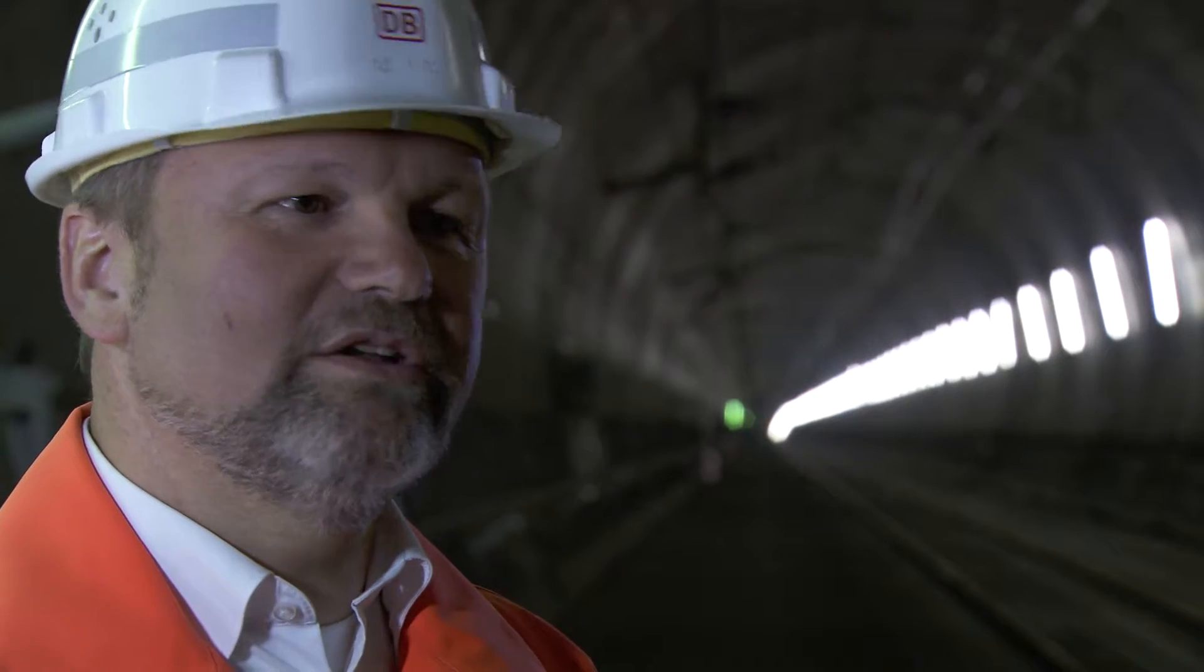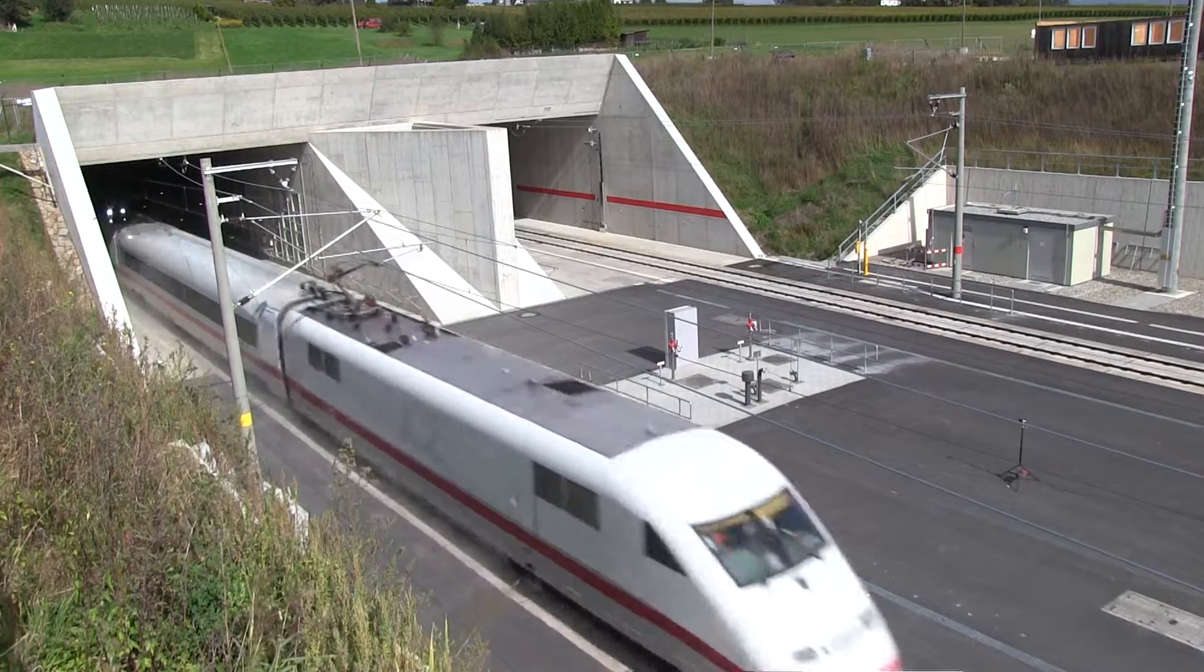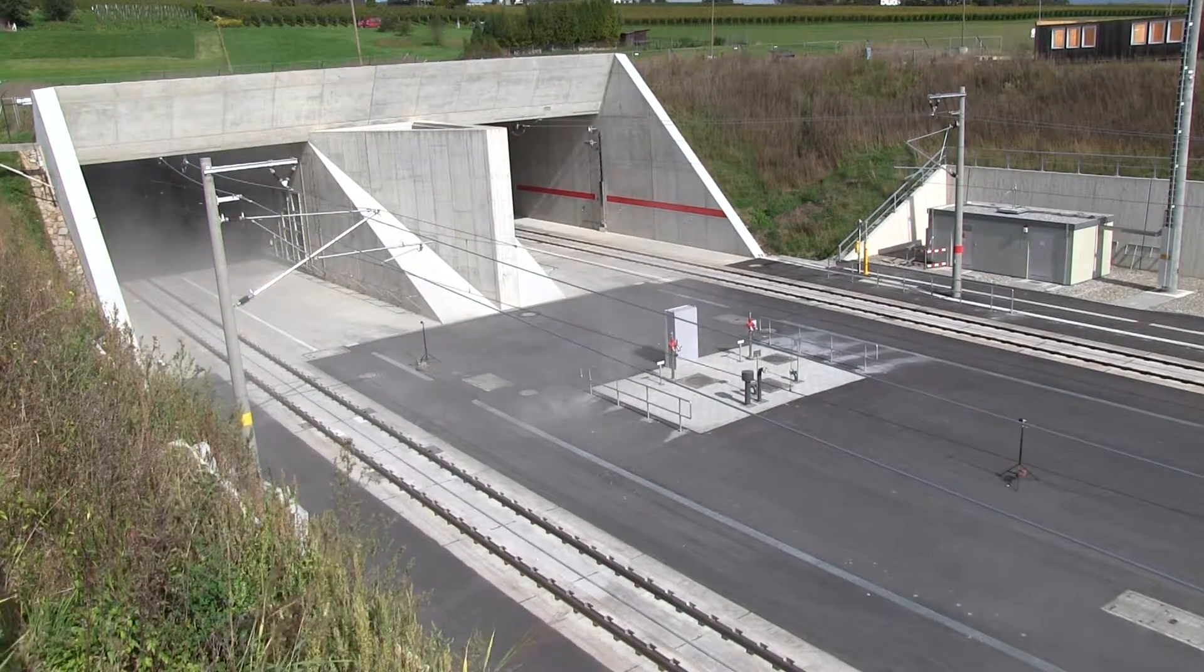Dust not only settles on the tunnel walls, potentially blocking sensitive appliances, it also gets stuck. It only gets loosened at higher speeds during the first train journeys, and then it seriously hampers visibility during the first runs through the tunnel.